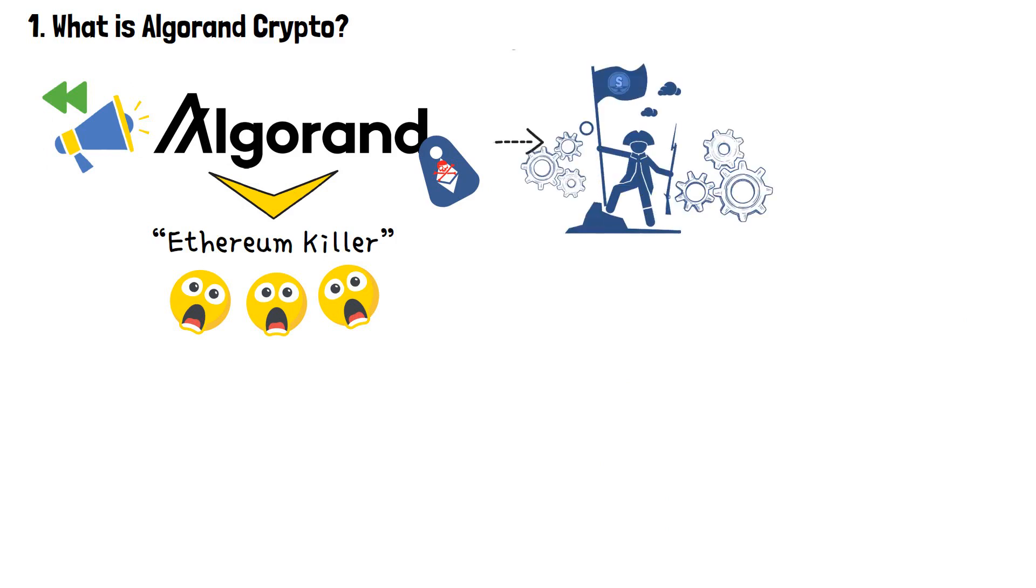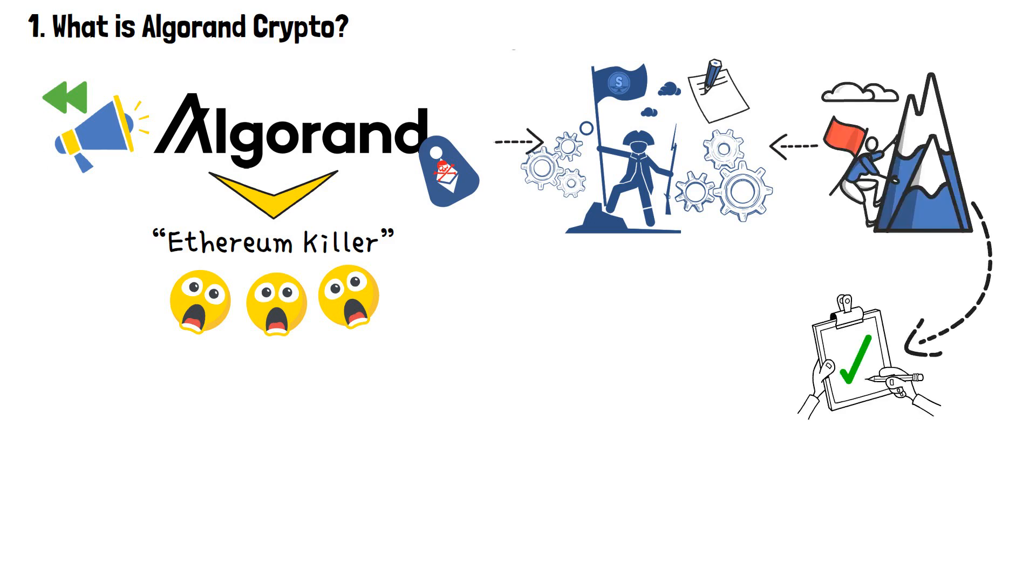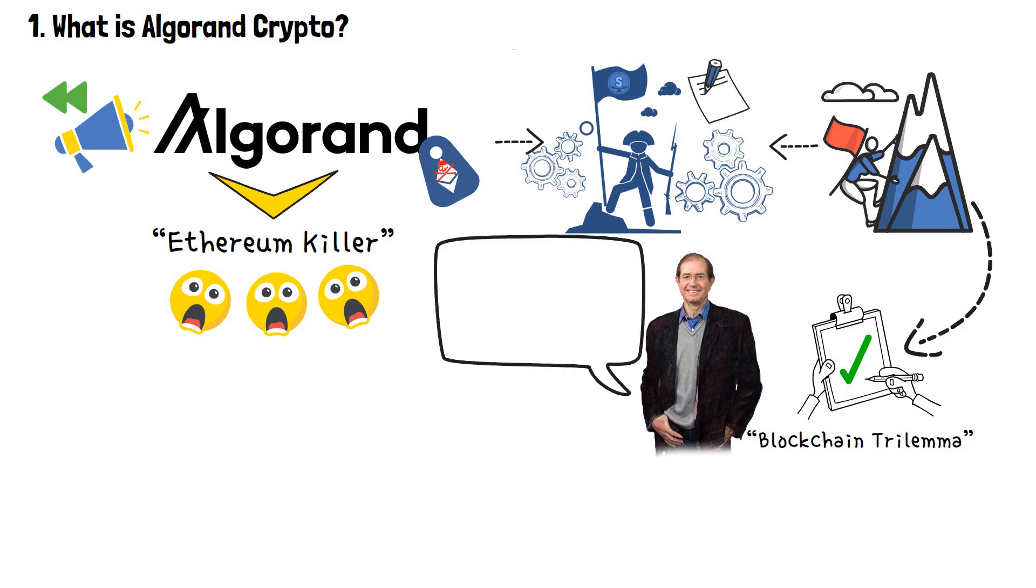As I've mentioned earlier, Algorand was dubbed as the potential Ethereum killer. In order to receive such a label, something truly game-changing has to be offered. And all of the innovations that Algorand has brought to the table were dictated by their goal of solving the infamous blockchain problem, known as the blockchain trilemma. And, as Algorand themselves claim, their innovations and technological advancements have put the project on its way to solving this problem.